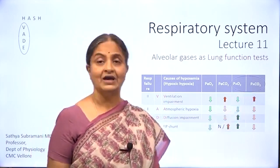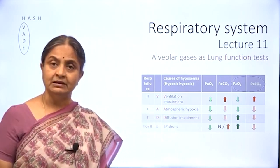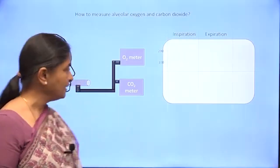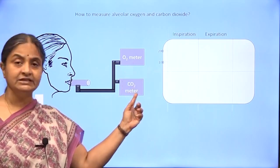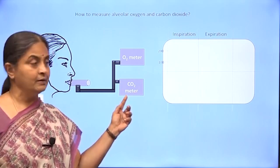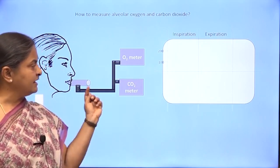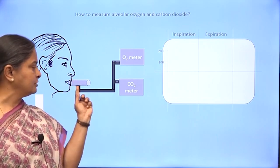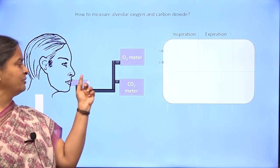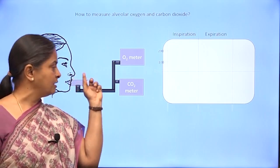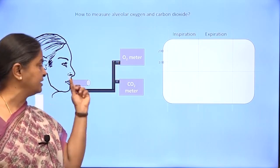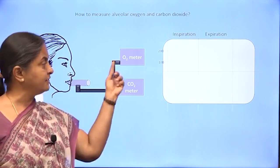Having understood the value of alveolar gas concentrations as lung function tests, we will see the method by which alveolar gas concentrations are estimated. There is an oxygen meter and a carbon dioxide meter available commercially. This is an infrared carbon dioxide meter called a capnometer. These two meters get a sample of the air that you breathe in and breathe out through a pump. You can breathe through your nose as you would do normally, with a small tubing stuck to the outside of the nose that delivers about 10% of the air you inhale and exhale to the meters.